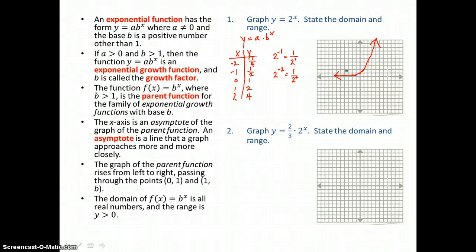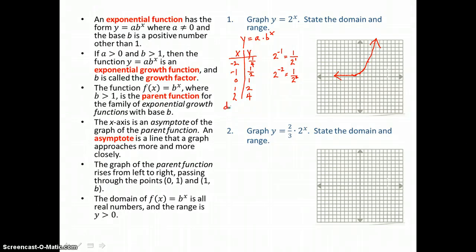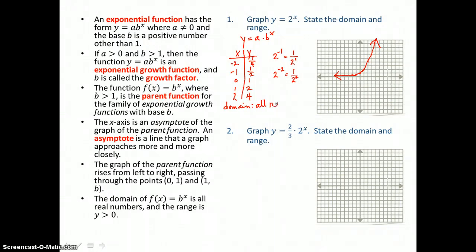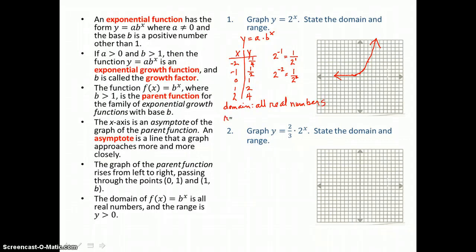You can see that this curve approaches the x-axis but never touches it. We call the x-axis an asymptote for this curve. The domain is all real numbers, because we can let that exponent be any real number. And the range — since this curve approaches the x-axis as an asymptote — y is always going to be greater than 0.